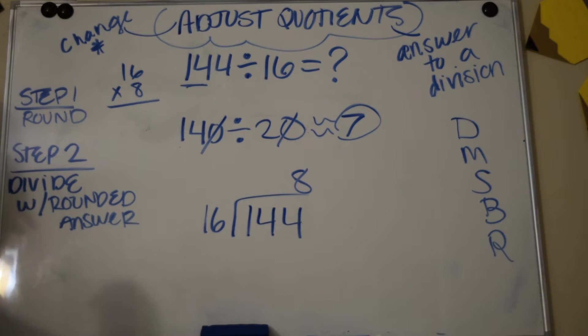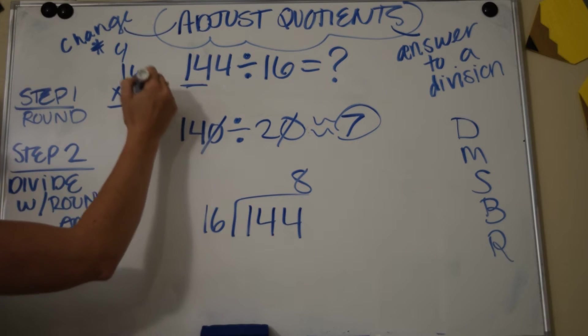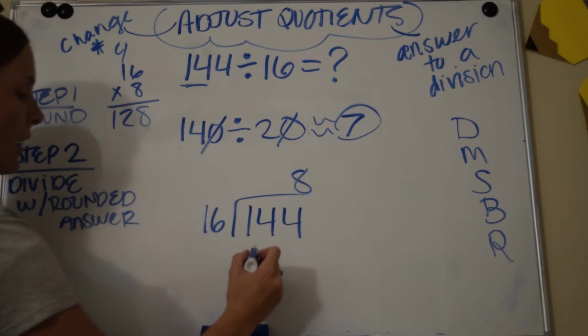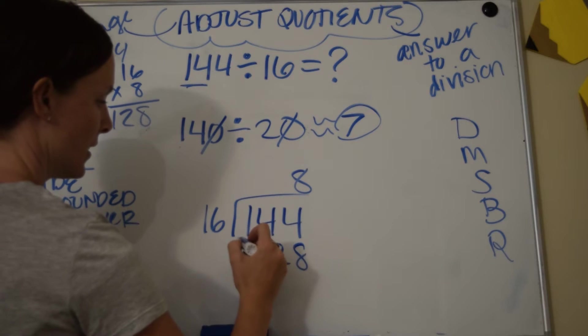Okay, so 8 times 6 is 48, 8 times 1 is 8, and 8 plus 4 is 12. So I have 128. Then I subtract.